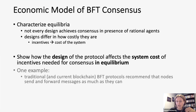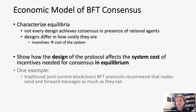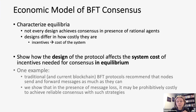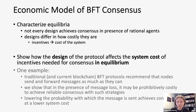One example of our results: in traditional BFT protocols, nodes are recommended to send and forward messages as much as possible — ideally with probability one. But we show that if messages cannot be sent perfectly, it may be prohibitively costly to achieve reliable consensus at probability 0.99. Paradoxically, lowering the probability with which messages are sent — for example, to one half — may achieve consensus at lower system cost.